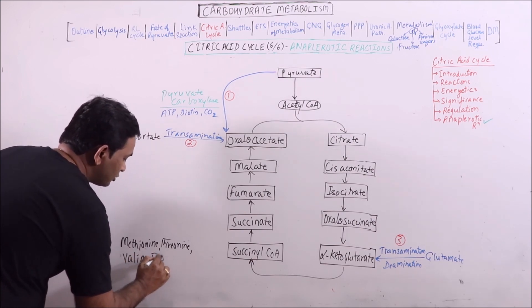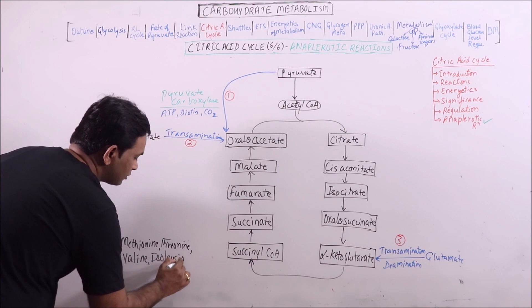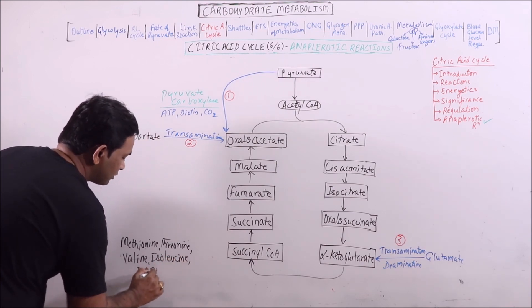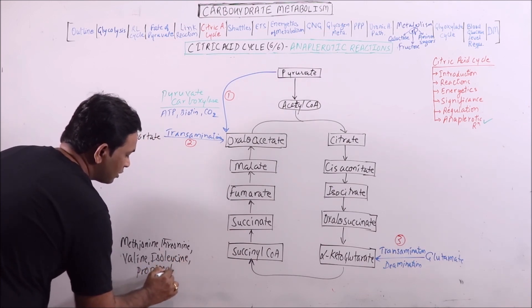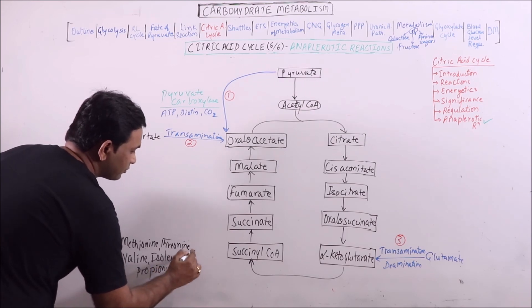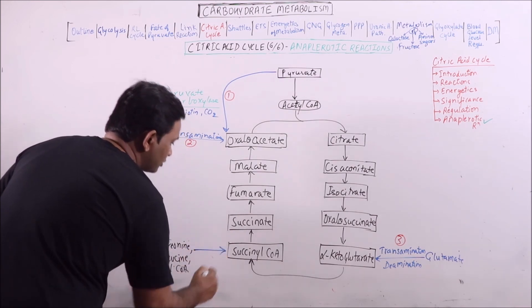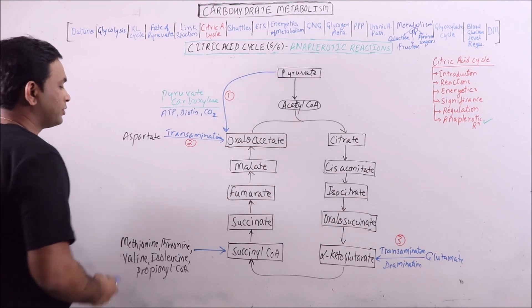Isoleucine and propionyl coenzyme A can also be converted to succinyl coenzyme A.